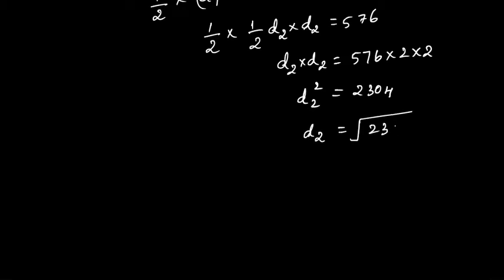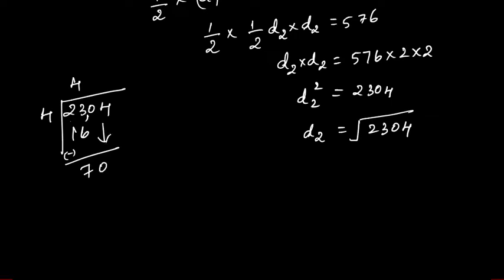You need the value of d2, so take square root of 2304. Divide the number in pairs, see the first two numbers and find the nearest square value. The nearest square value will be 4, 4 into 4 is 16. Subtract, you will get 7. Take both numbers down, so 04. Whatever number you have here, multiply by 2. You will get 8 here, and whatever number you add here, add the same number here to get a value near 704.